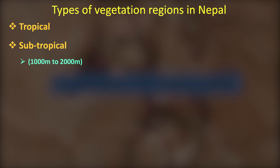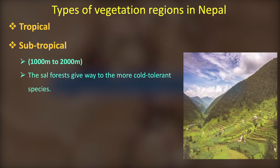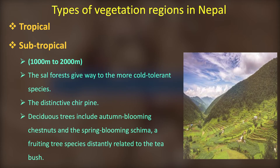Subtropical vegetation is the next type. There are mainly Chir Pines and Deciduous trees. In this climate, trees shed all their leaves in one season.